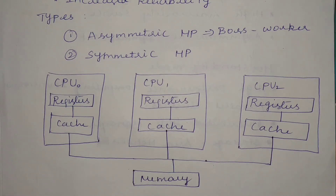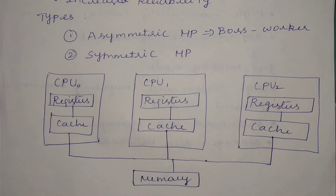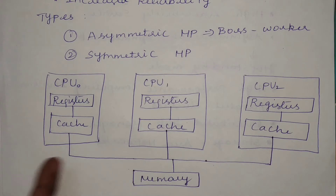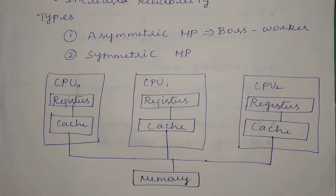In case of symmetric multiprocessing, there will be a shared common OS as well as memory. But in asymmetric, it follows a master-slave or boss-worker relationship. In symmetric, all processors are treated equally. But in asymmetric, they are not treated equally because there is a specific relationship between the processors.